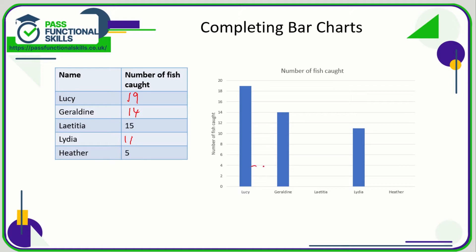We need to make sure that the gap between Lucy and Geraldine is exactly the same as the gap between Geraldine and Leticia. This bar is going to go up to 15, which is between 14 and 16. If you're using a ruler this is certainly a lot easier. The width of the bar is the same as the width of all the other bars as well. There we go — Leticia's done. Using a ruler to make a straight line will make it much neater.